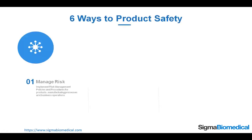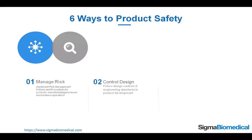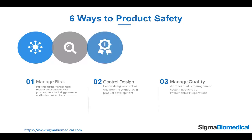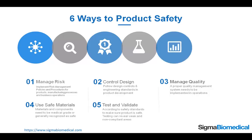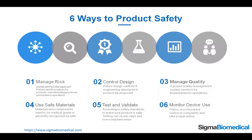Six ways to product safety. 1. Manage risk: implement risk management policies and procedures for products, manufacturing processes, and business operations. 2. Control the design: follow design controls and engineering standards in product development. 3. Manage quality: a proper quality management system needs to be implemented in operations. 4. Use safe materials: materials and components need to be medical grade or generally recognized as safe. 5. Test and validate: according to safety standards, to make sure the product is safe — testing can reveal weak and non-compliant areas. 6. Monitor device use: follow and document customer complaints and take proper action.